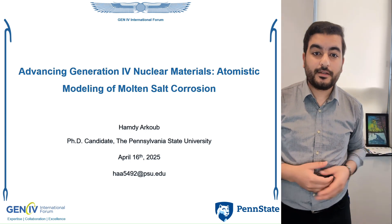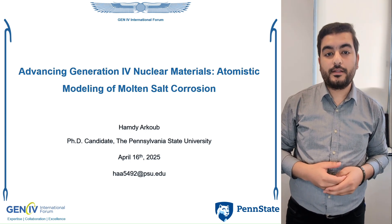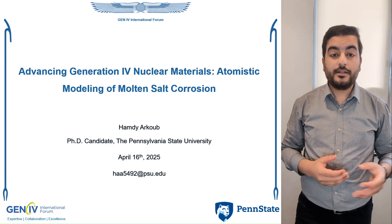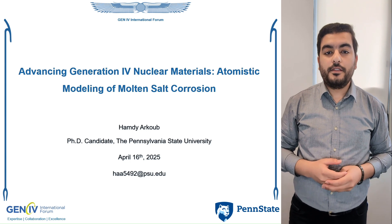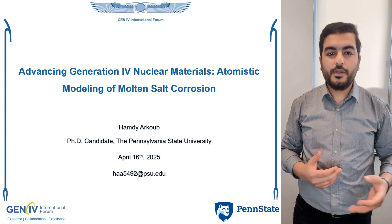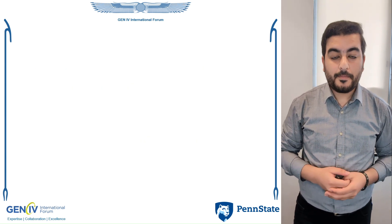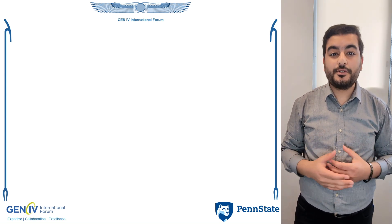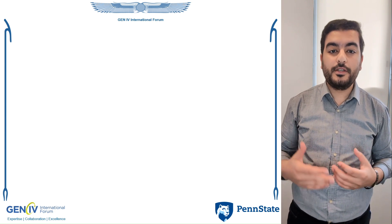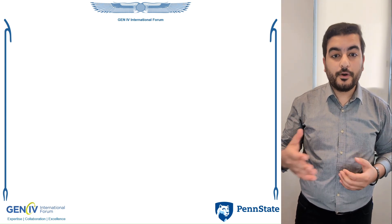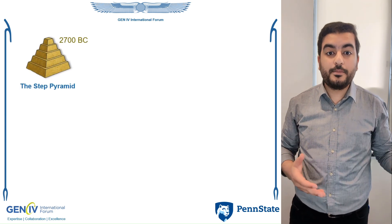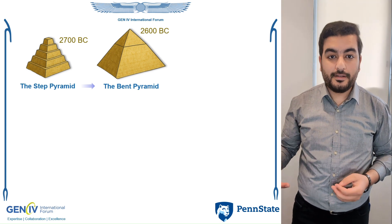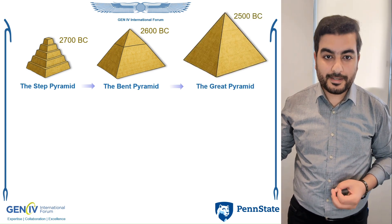Before going into that, I would like to start by saying that as an Egyptian I have always admired history and learned that for a civilization to thrive, the wheel of technology should always advance forward. For example, most people don't realize that it took the Egyptians almost 200 years of innovation and effort to evolve and advance from the step pyramid design to the bent pyramid and finally to the great pyramids of Giza that we all know.